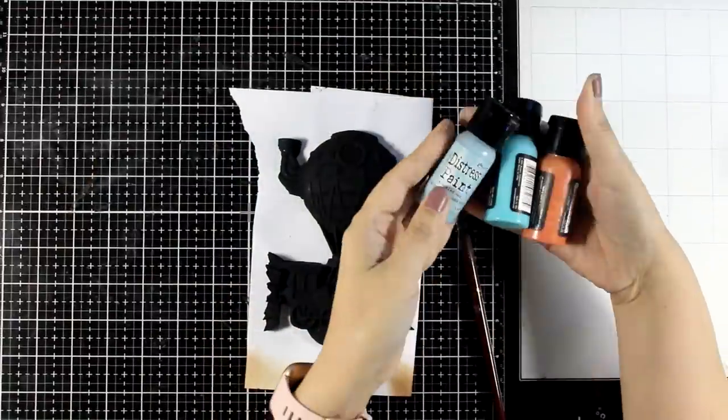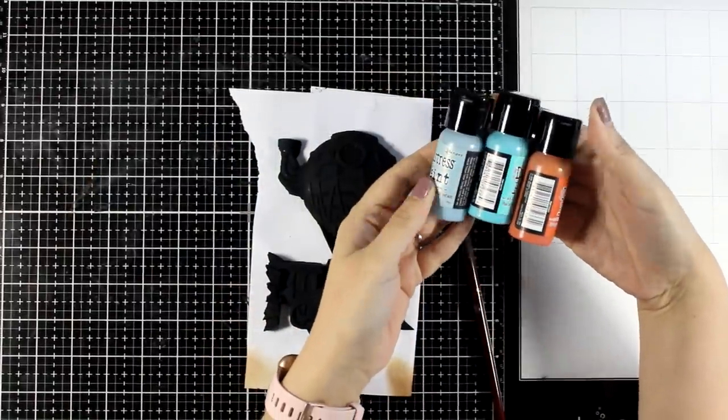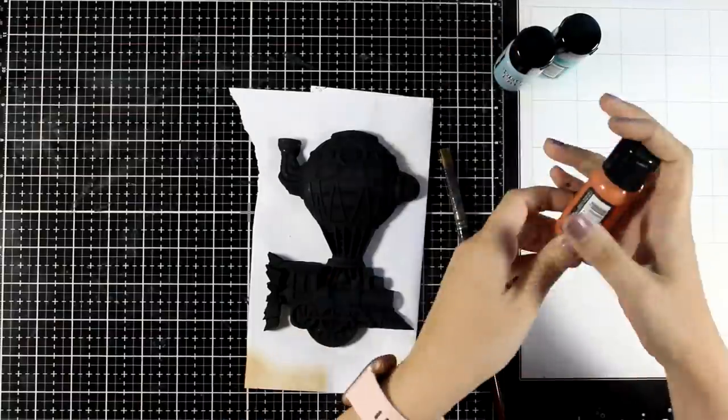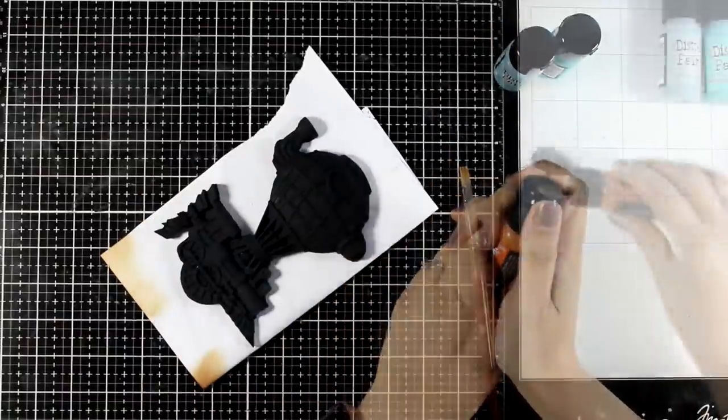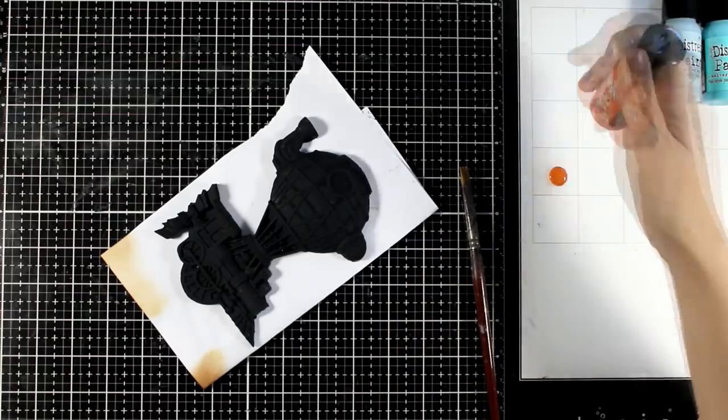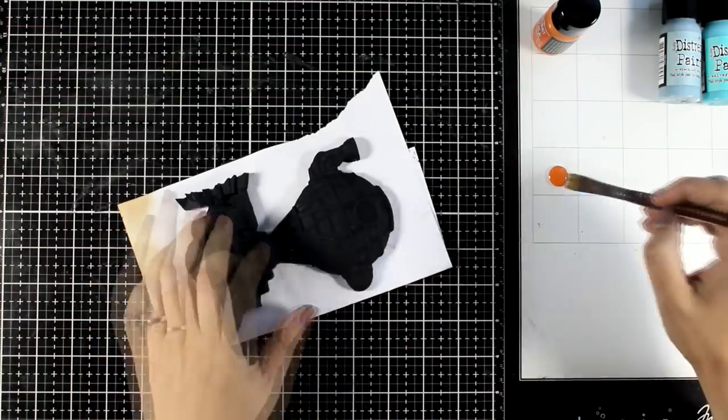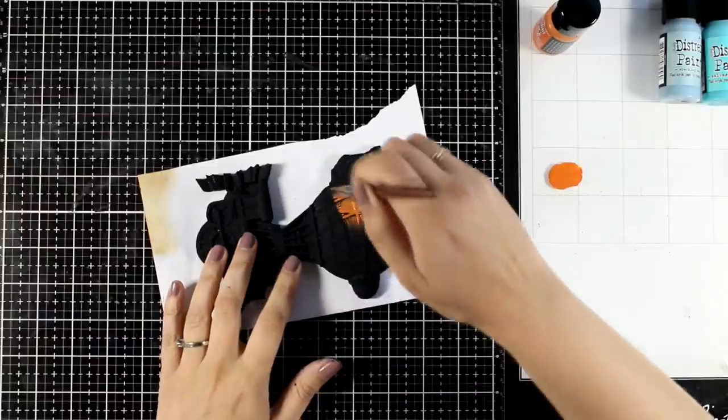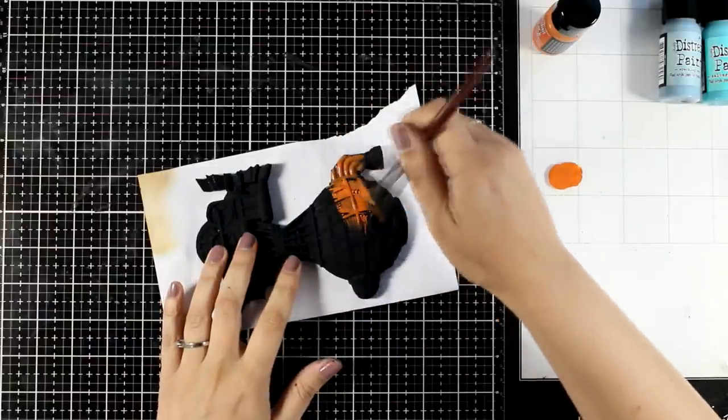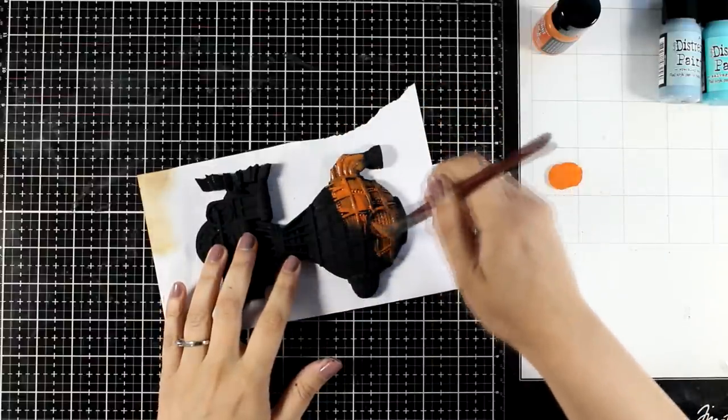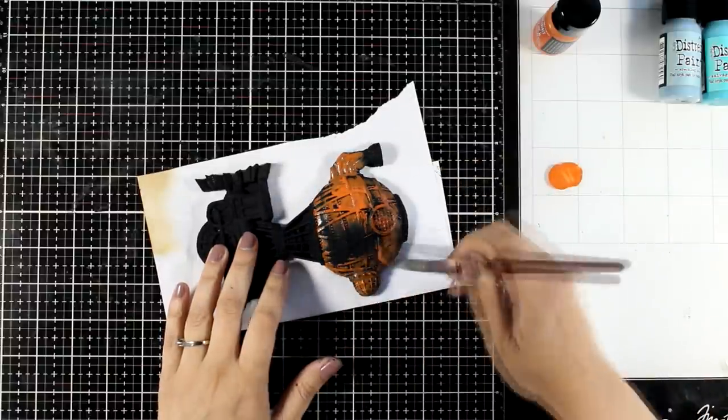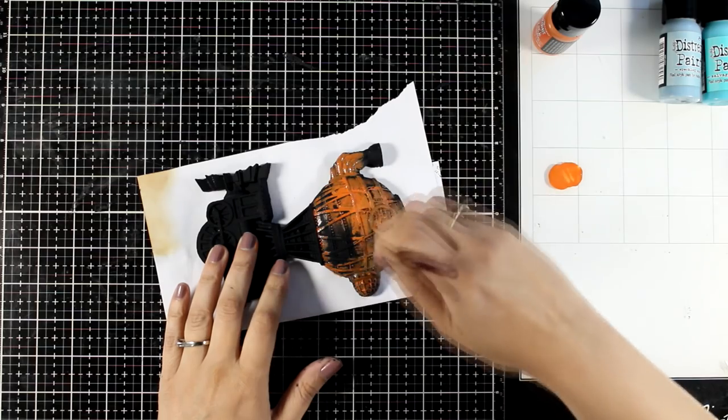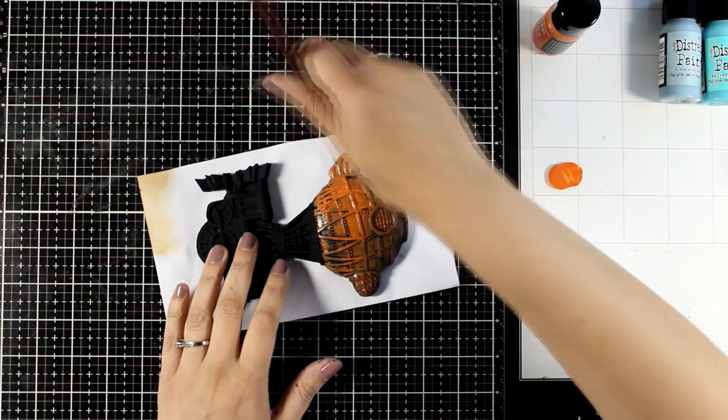I'm going to work on the focal point. For that I grabbed my acrylic paints. These are Distress Paints and I'm starting with Crackling Campfire. Always make sure that you shake those bottles well. I'm going to add just a dab of paint, I don't need too much. I'm going to color the top part of the balloon and the train.